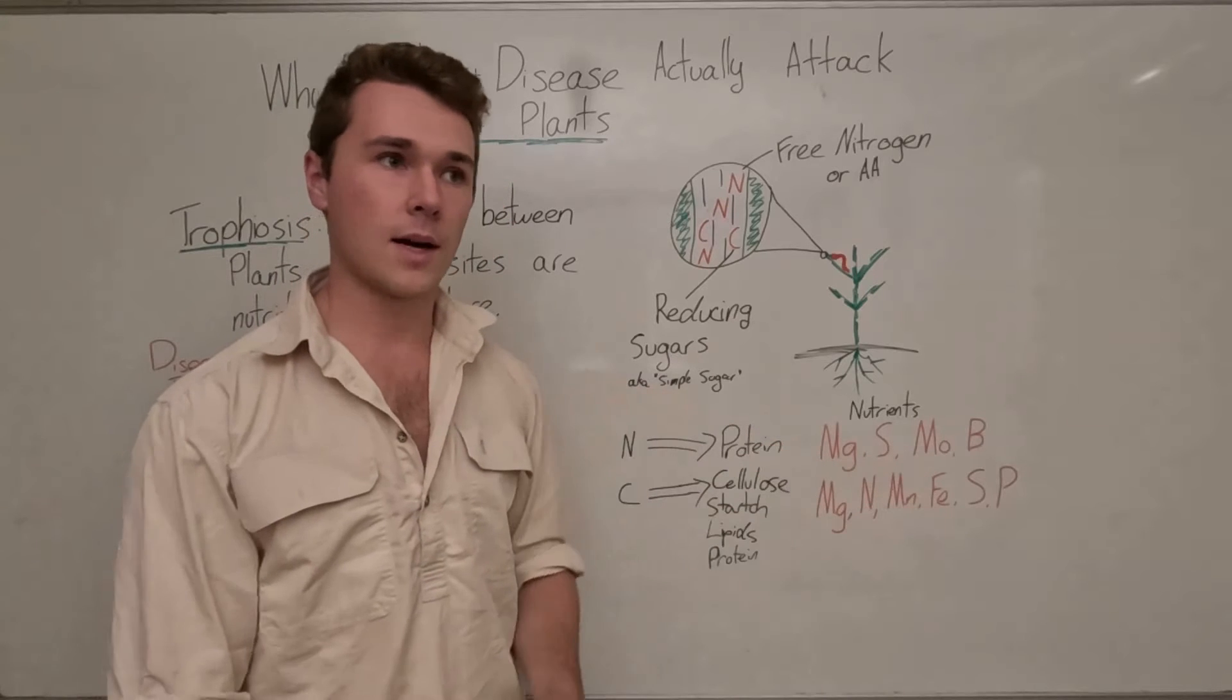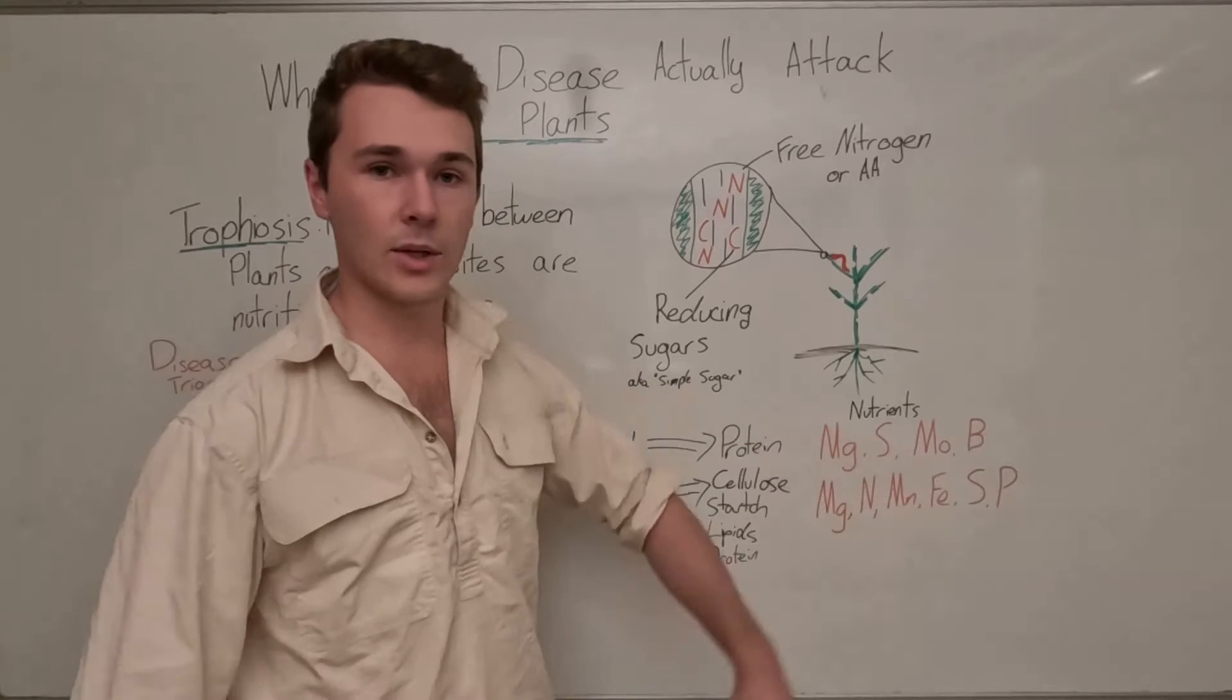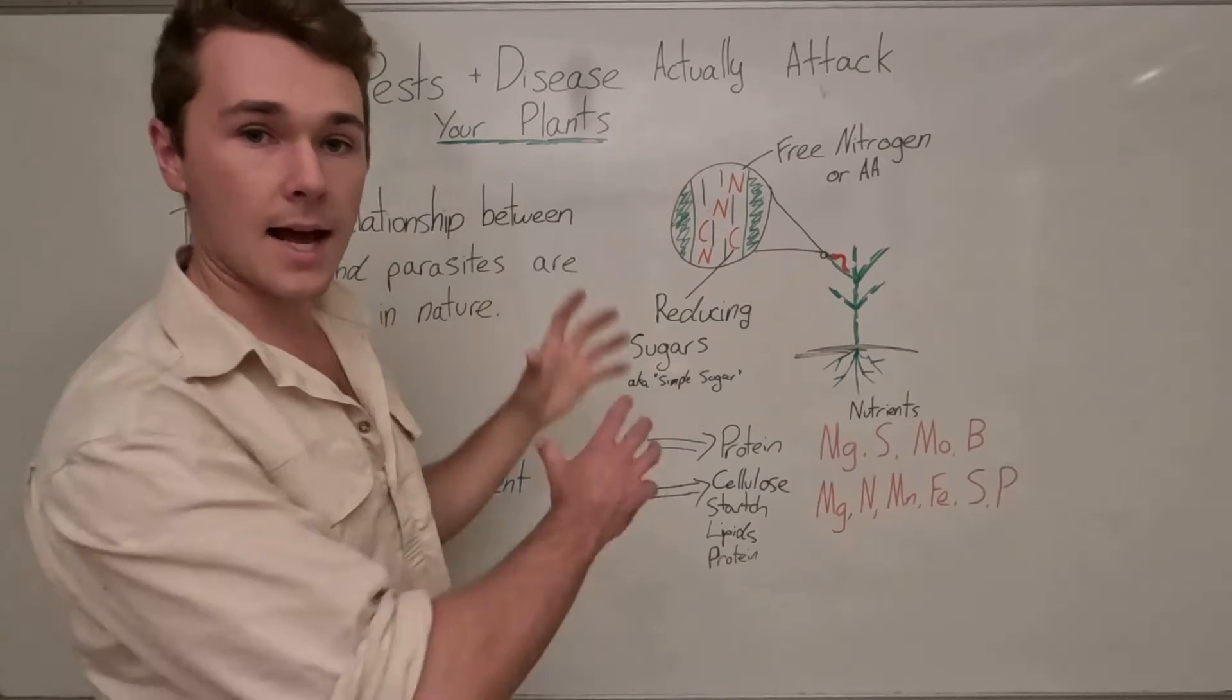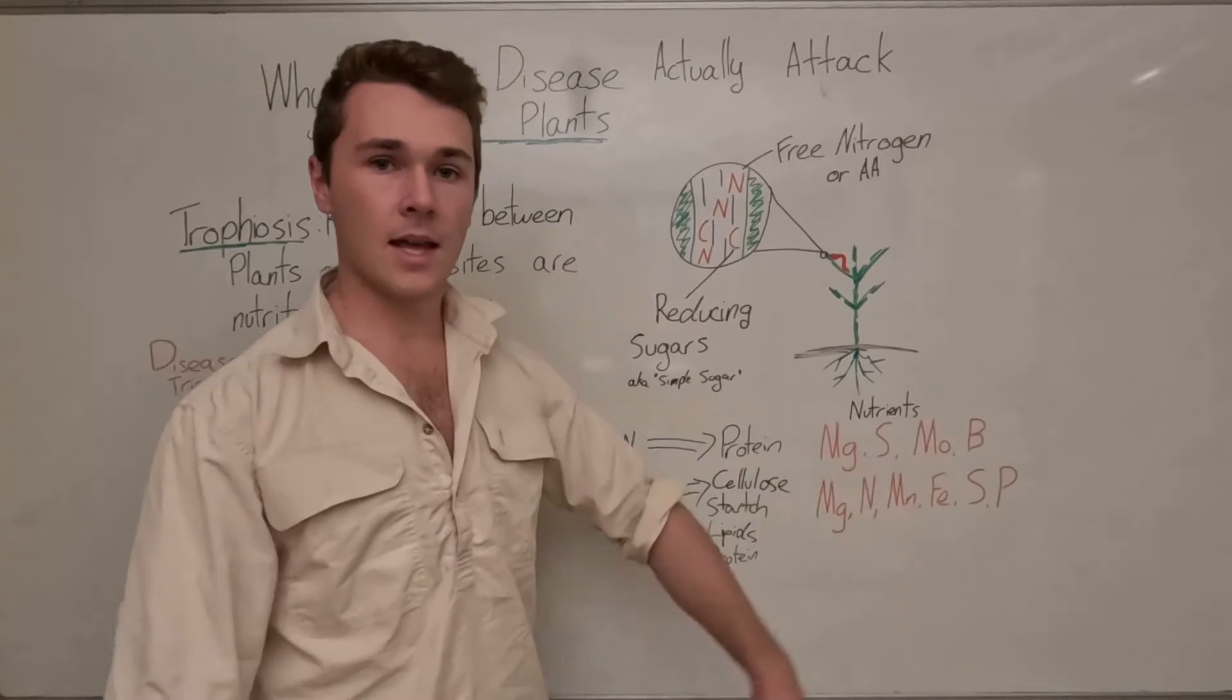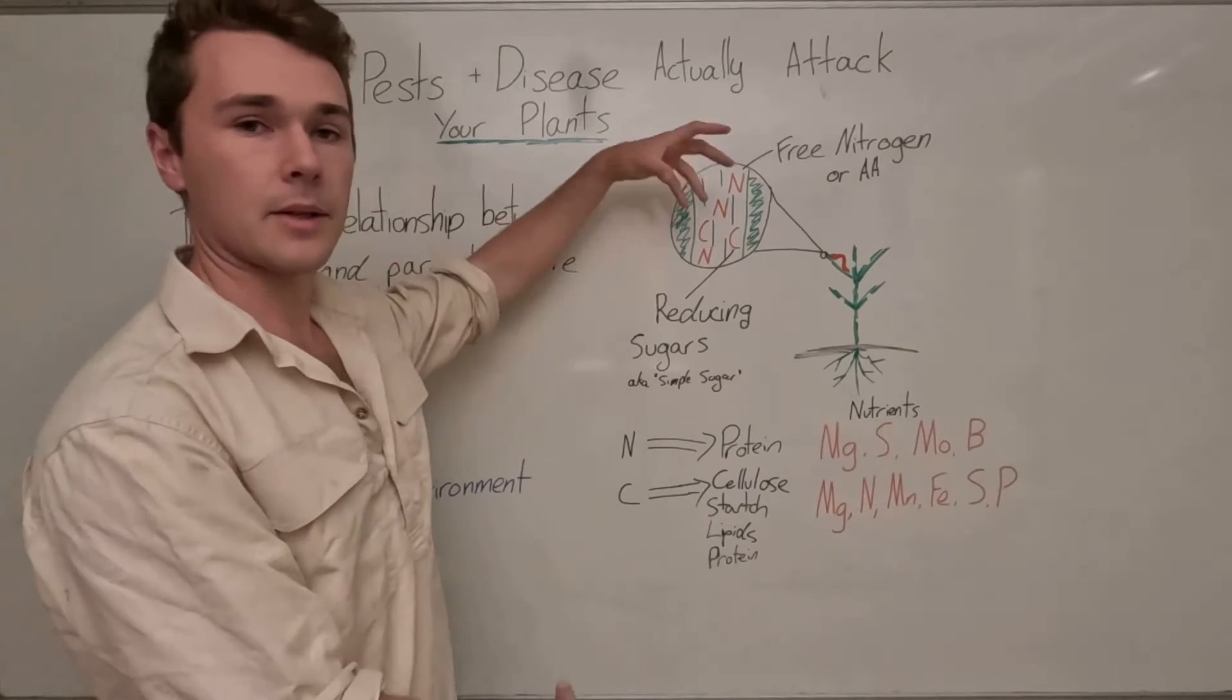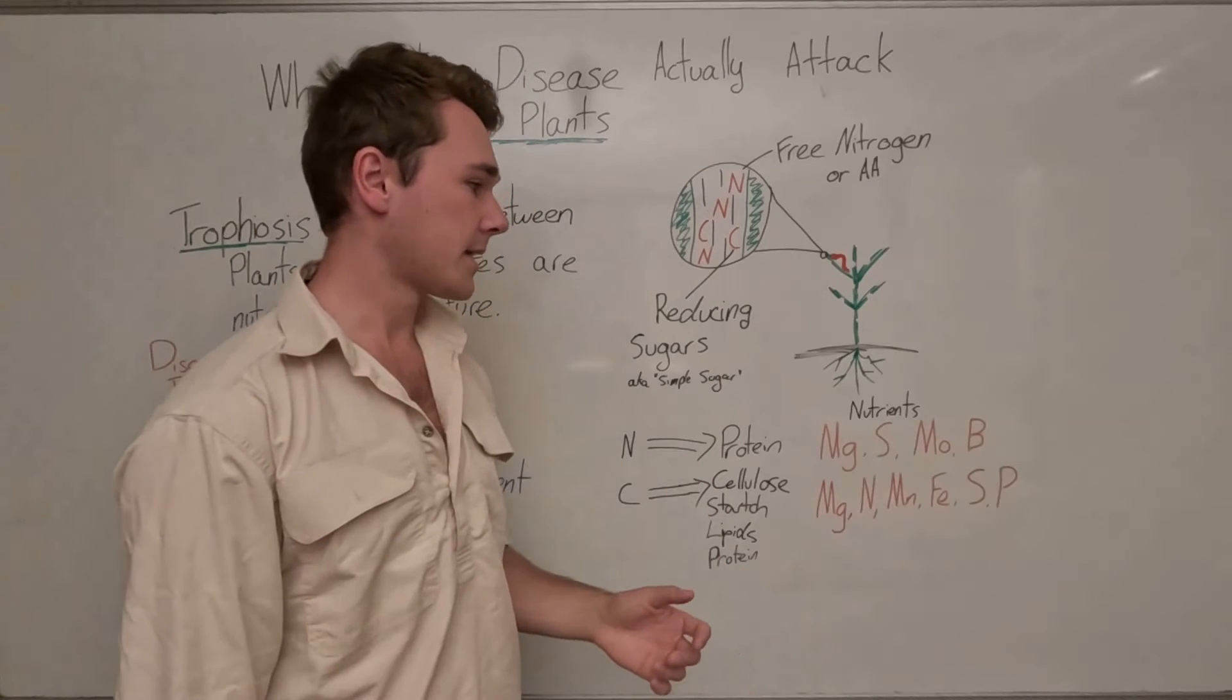Molybdenum is important for nitrate conversion. So if we don't have molybdenum, we can have a heap of free nitrates in our plant that aren't getting converted into amino acids and not getting converted into proteins. So we can actually have everything, but if we don't have molybdenum and we're applying all this nitrate, then we're going to have a buildup of nitrate in our plants and it's going to make them very susceptible to pest and disease.